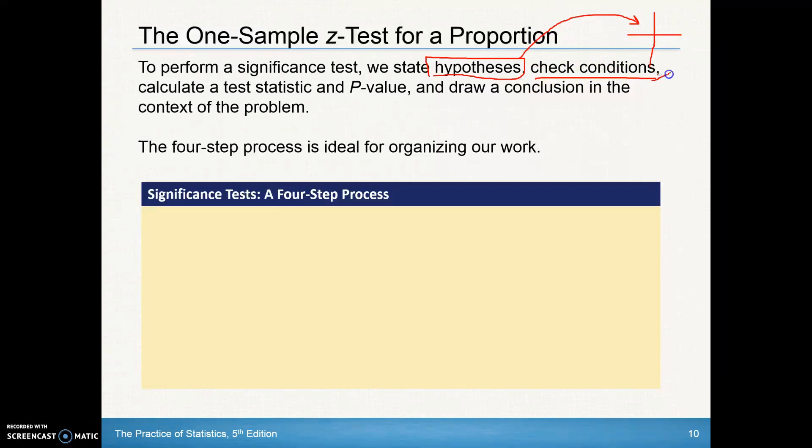Checking the conditions, that's the SIN part that goes in the second box of the four-step process. The calculations you do to do that test statistic and the p-value, that will go into the third box. That's where we do our problem. And then our conclusion will go in that last box of our four-step process as we go through.